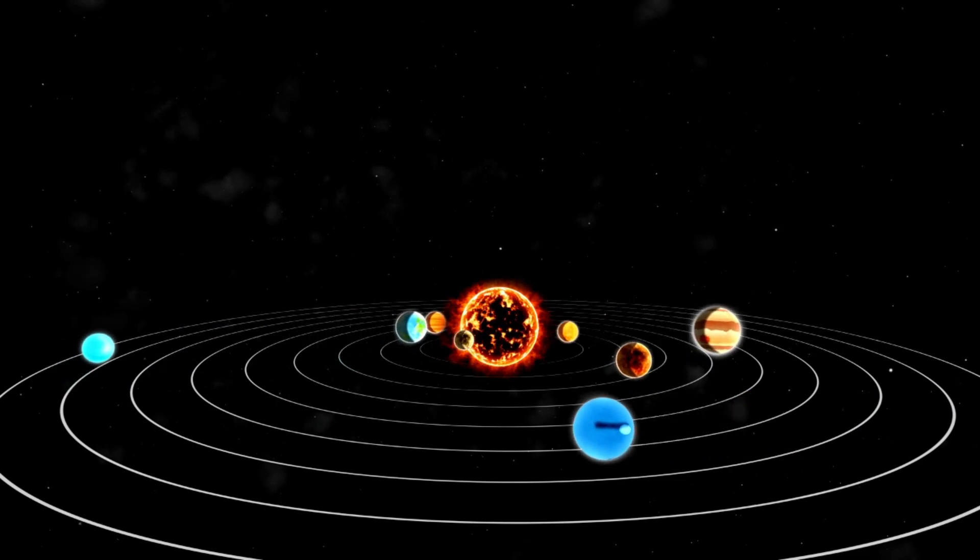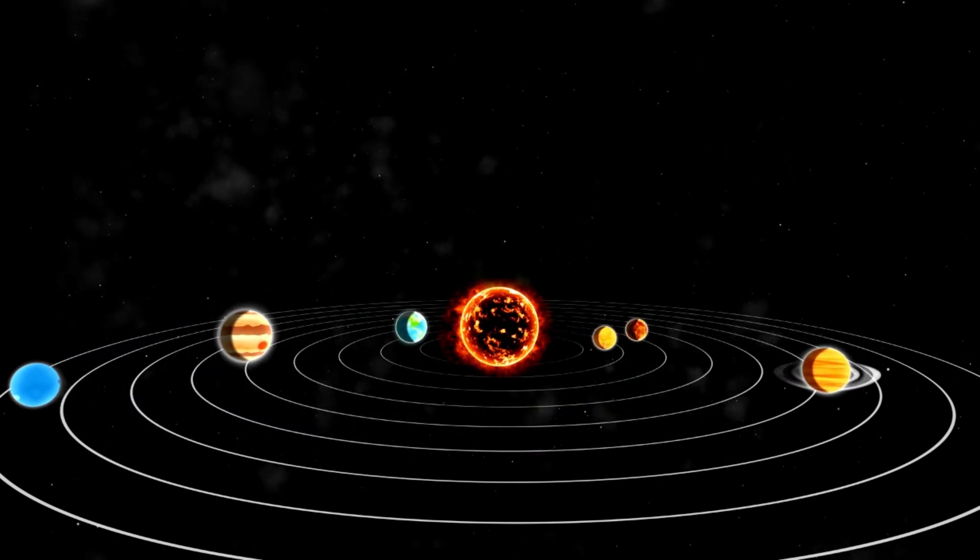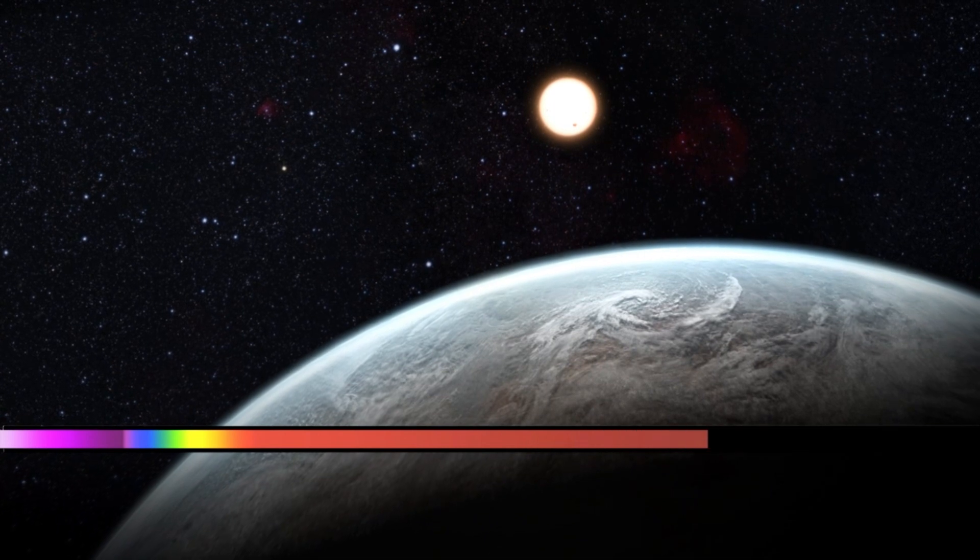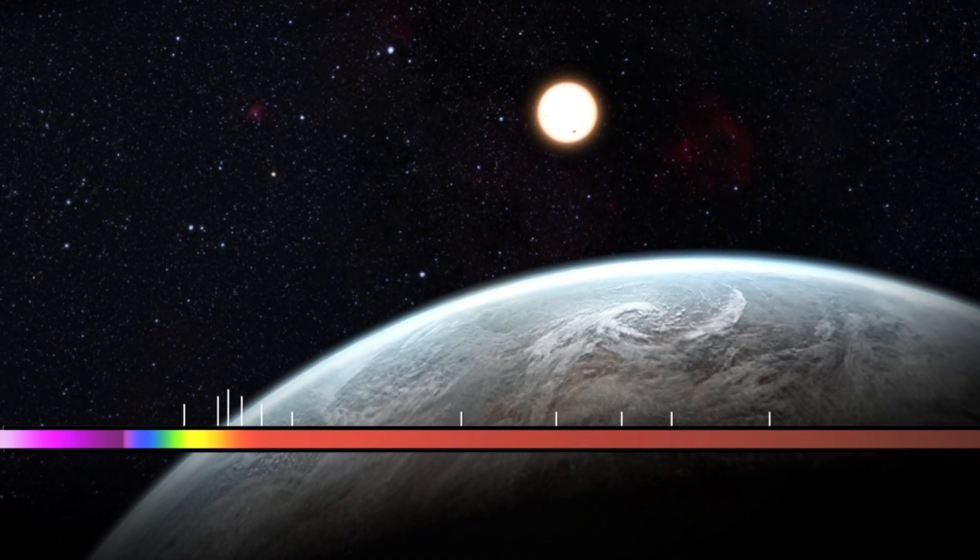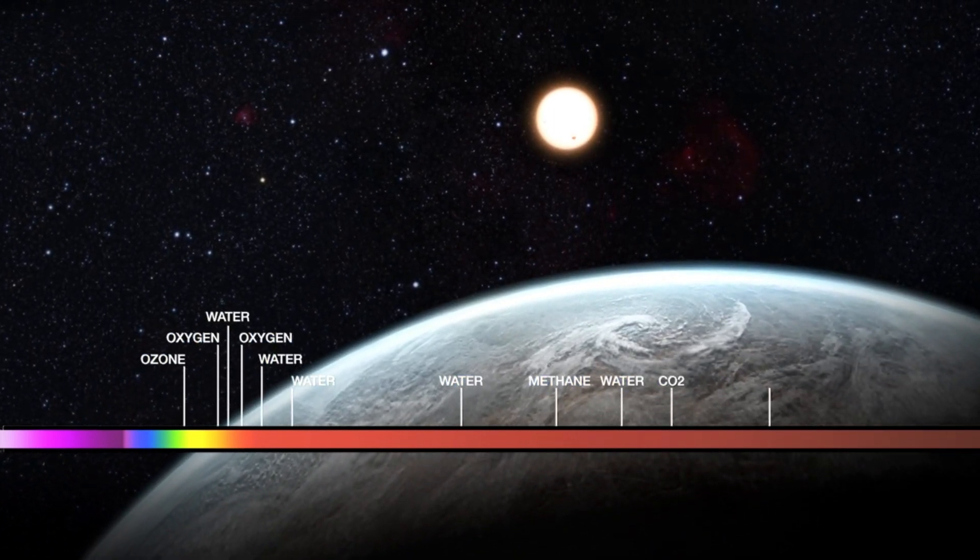However, in 1992, the first confirmed detection occurred, which left scientists speechless. Another exoplanet, a different one which was first detected in 1988, was confirmed in 2003.